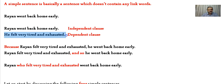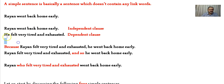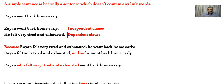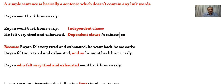'He felt very tired and exhausted', however, is a dependent clause. If you read it alone you will keep asking: who are we talking about? I have used a pronoun instead of a proper noun like Ryan, making this sentence ambiguous. Therefore, you need to join it to another sentence to make it clearer — that is why it is called a dependent clause.